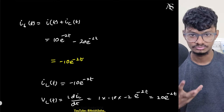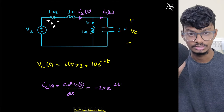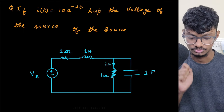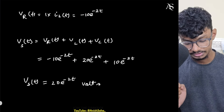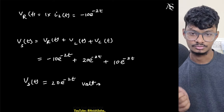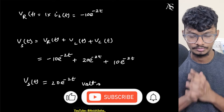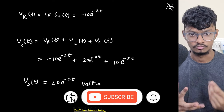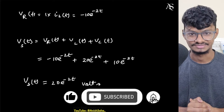This is pretty straightforward. You can solve it using Laplace as well, but you don't need to — you can solve it with just differential equations, which was the most important part. So the answer is Vs(t) = 20e^(-2t) volts. Thank you for watching, and I'll see you in the next video.